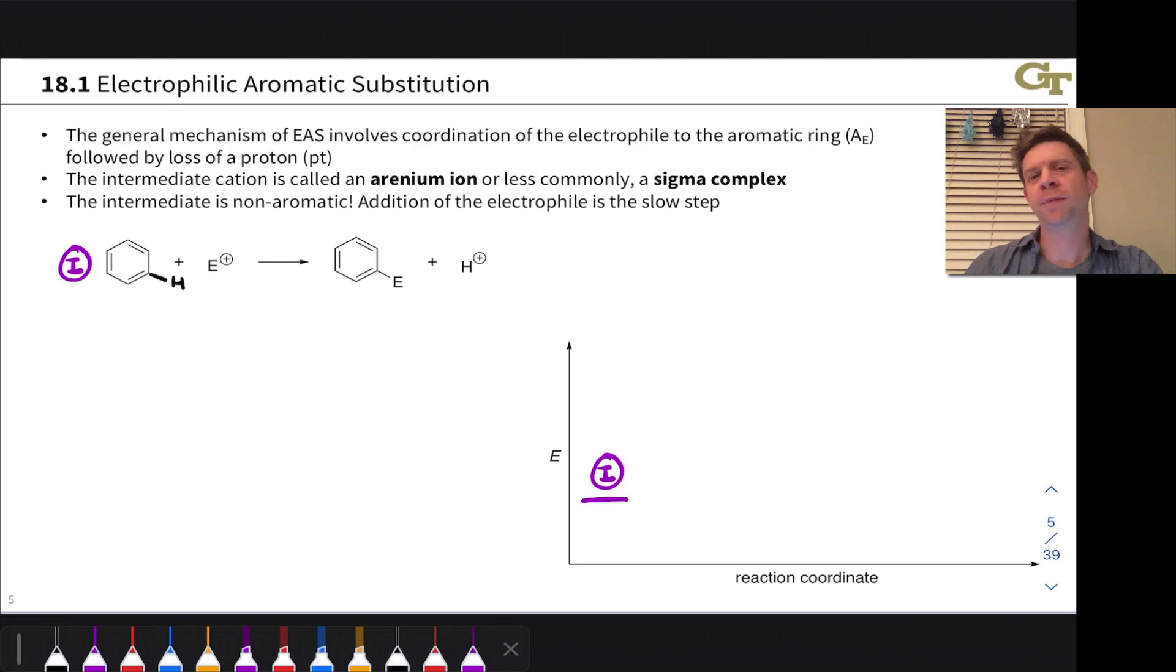Here we're going to discuss the general mechanism of electrophilic aromatic substitution after the active electrophile E plus has been generated. There's a two-step mechanism here that is universal for electrophilic aromatic substitutions that we'll see in this course.